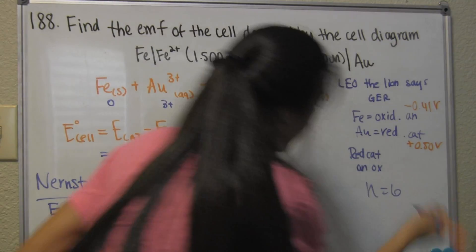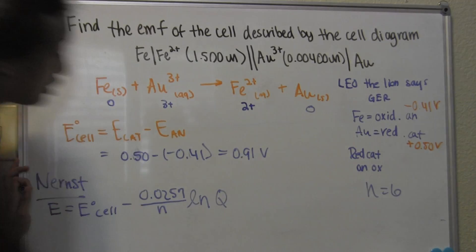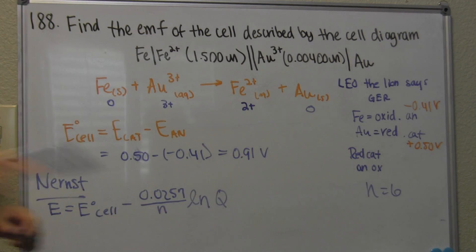N equals 6 ln of Q. Q is the reaction quotient, which is basically the concentration of the products divided by the concentration of the reactants.